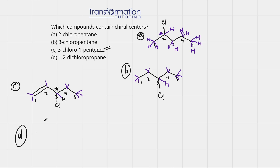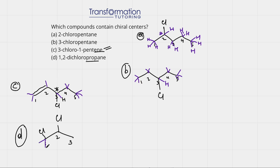Let's go to the final one: 1,2-dichloropropane. Prop means three carbons: 1, 2, 3. 1,2-dichloro means on carbon 1 I have a chlorine, and on carbon 2 I also have a chlorine. Let's show the hydrogens. Carbon 1 has two bonds so it needs two more — two hydrogens here. One hydrogen on carbon 2, one hydrogen on carbon 3, and these purple lines represent all the hydrogens.